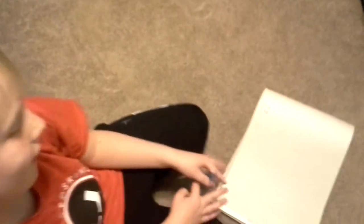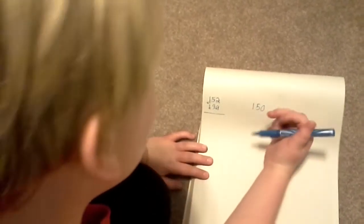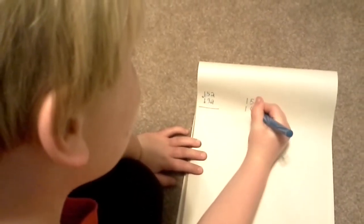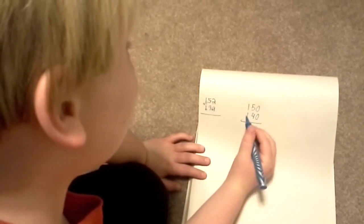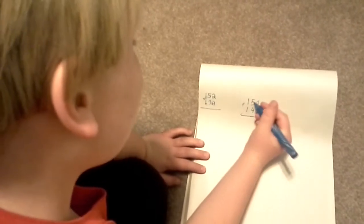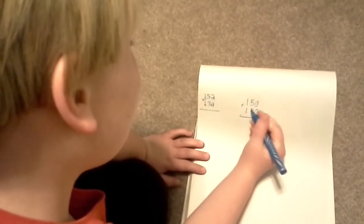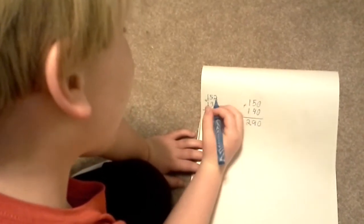So 139 is rounded to 140. Now you have a different problem over here. So 0 plus 0 equals 0, 5 plus 4 equals 9, and 1 plus 1 equals 2. 290.